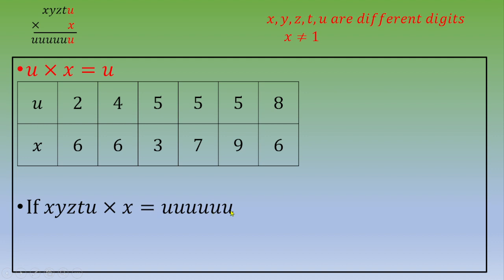x, this is different from 0. So you end up with x, y, z, t, u is equal to u, u, u, u, u, u over x.